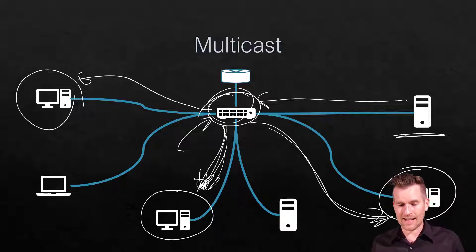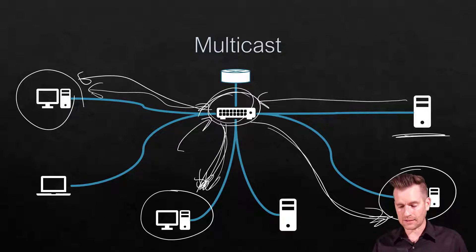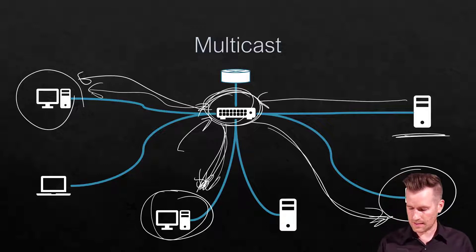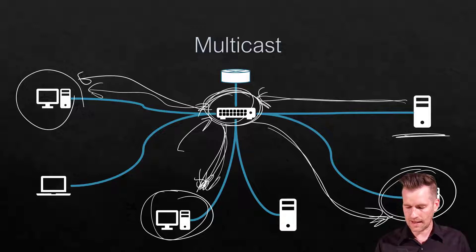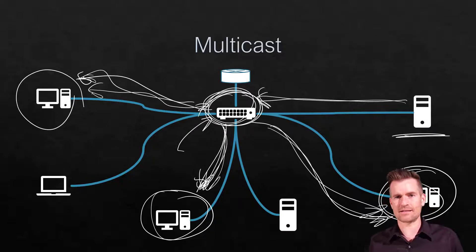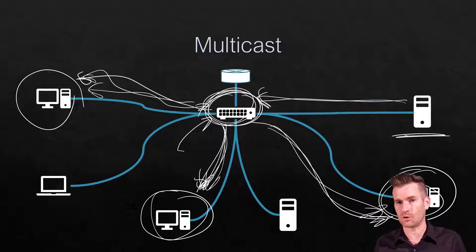There is also a dynamic way where when a machine checks in to the switch, it will actually tell the switch which groups it wants to be a part of. So there's a dynamic way for machines to subscribe to a group. Then when that server sends out data, the switch knows where to send it. And if it doesn't know which ports are assigned to that specific multicast group, then it will just broadcast it out to all devices.